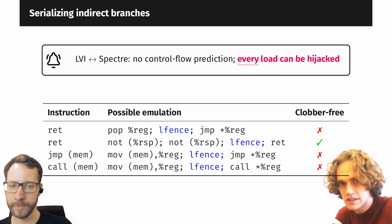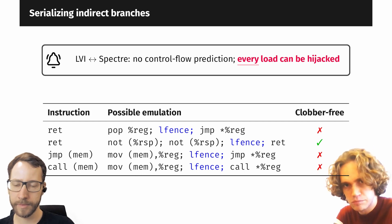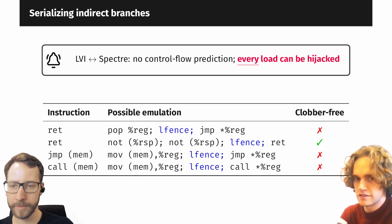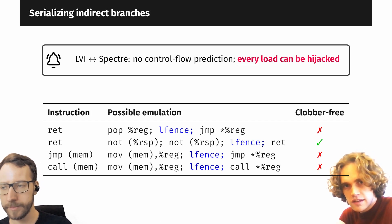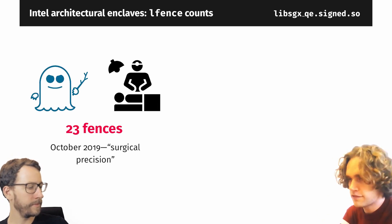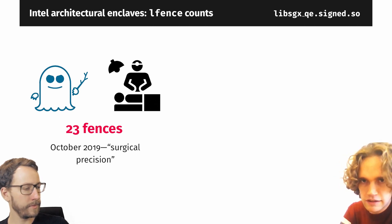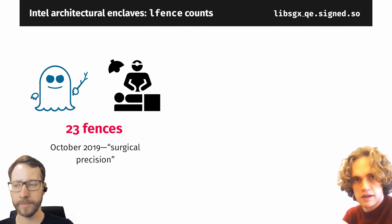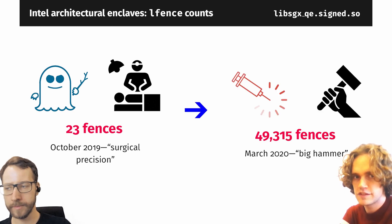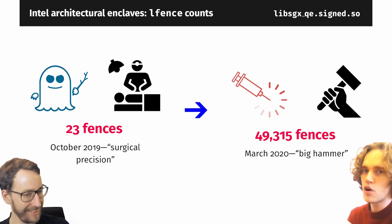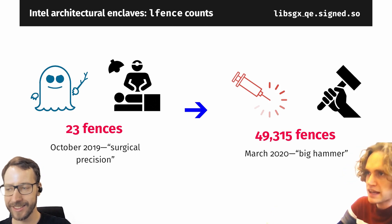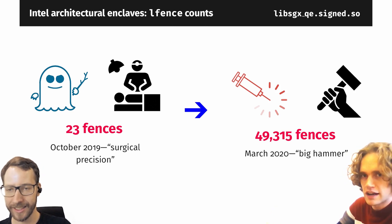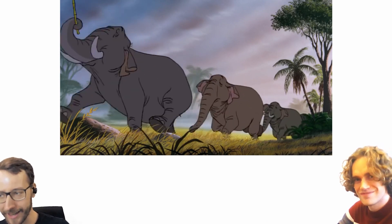You can see the mitigation sequences here — they emulate the return and insert an LFENCE in between. That's really bad. Back in October 2019, we measured only 23 such fences in the Intel quoting enclave for Spectre. But after LVI patches — the big hammer — we have 50,000 fences. That's orders of magnitude more. We can expect significant performance consequences.